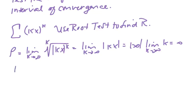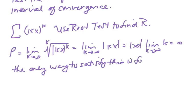And the only way to satisfy the convergence constraint that rho be greater than or equal to 0 or less than 1 is for x to equal 0. So the only way to satisfy this is for x to equal 0.